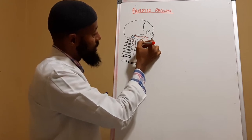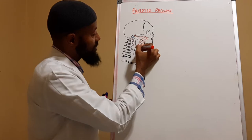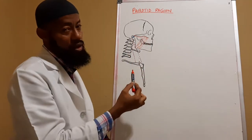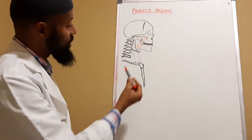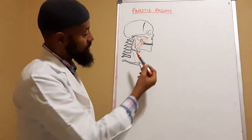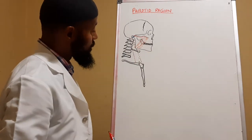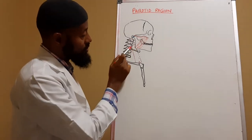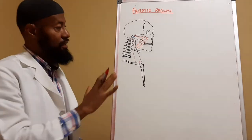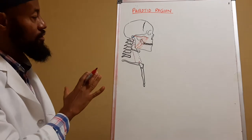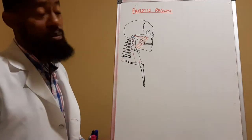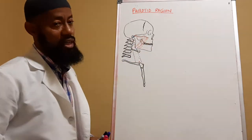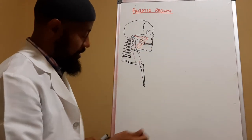The masseter muscle is a quadrate muscle attached to the inferior margin of the mandillary process of the zygomatic arch — that's the proximal attachment — and the distal attachment is to the angle of the mandible. The inferior boundary of the parotid region is the angle of the mandible. The medial boundary is the body of the mandible, which is the ramus.